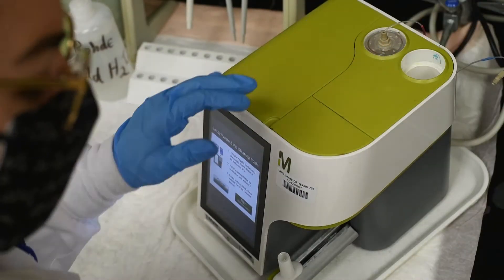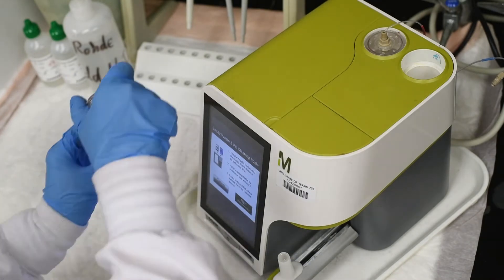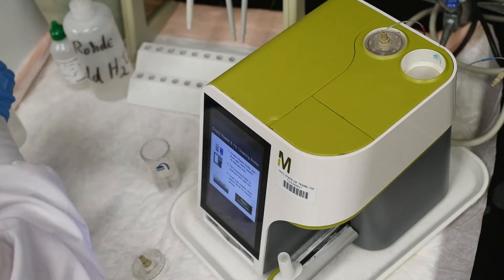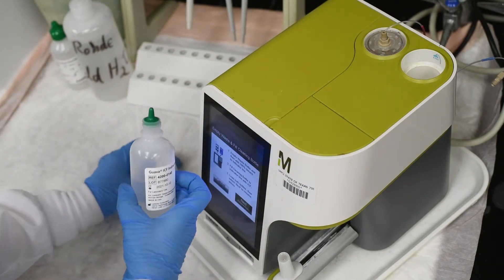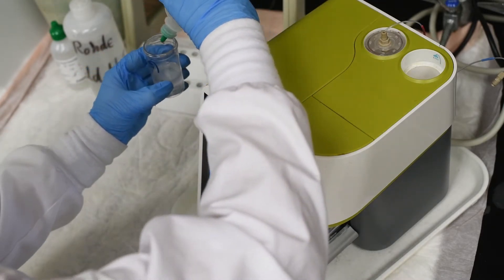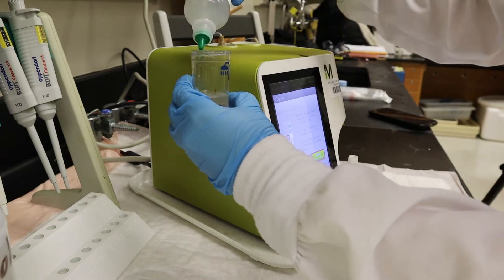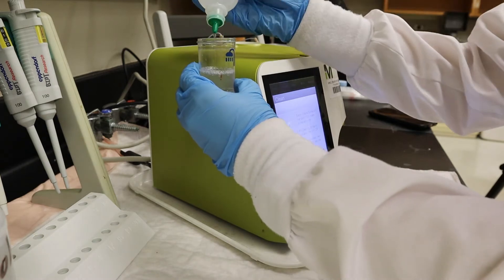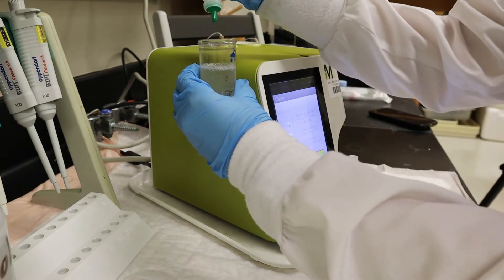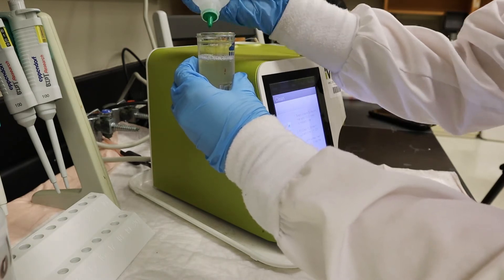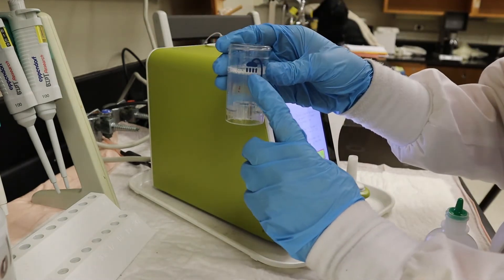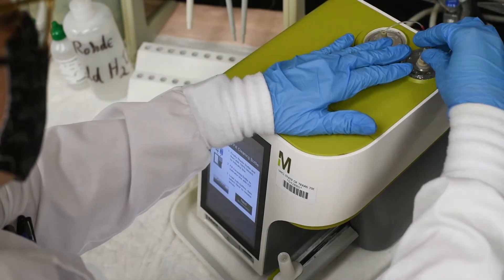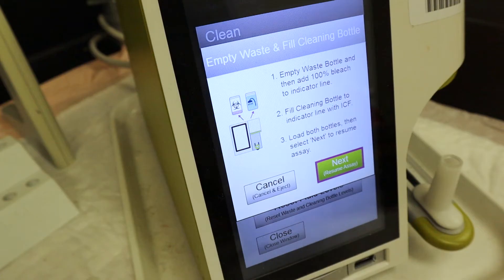To replace the bottle, align the base with the unit, push down, and reattach the tubing. To refill the cleaning bottle, add Instrument Cleaning Fluid (ICF) to the bottom of the shower logo. The ICF is important because it effectively removes sample clogs and buildup from cell debris, proteins, and reagent dye residues. Once both bottles are secured and connected, close the dialog window.